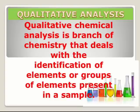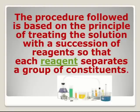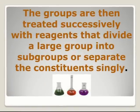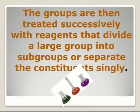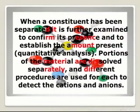Qualitative chemical analysis is a branch of chemistry that deals with the identification of elements or groups of elements present in a sample. The procedure is based on the principle of treating the solution with a succession of reagents so that each reagent separates a group of constituents. The groups are then treated with reagents that divide large groups into subgroups or separate constituents singly. When a constituent has been separated, it is further examined to confirm its presence and to establish the amount present — i.e., the quantitative analysis. Portions of materials are dissolved separately and different procedures are used to detect the cations and anions.